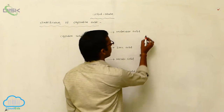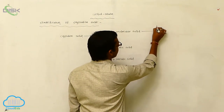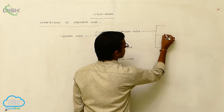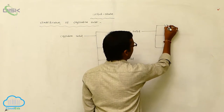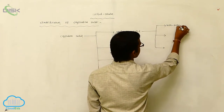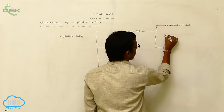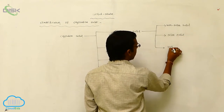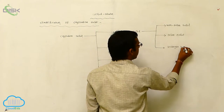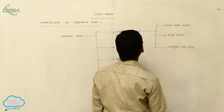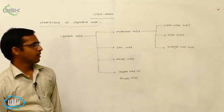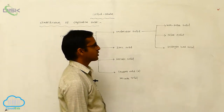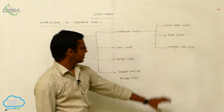Molecular solid is further classified into three types based on interactions: non-polar solid, polar solid, and hydrogen bond solid. So molecular solids have three sub-types: non-polar, polar, and hydrogen bond solid.